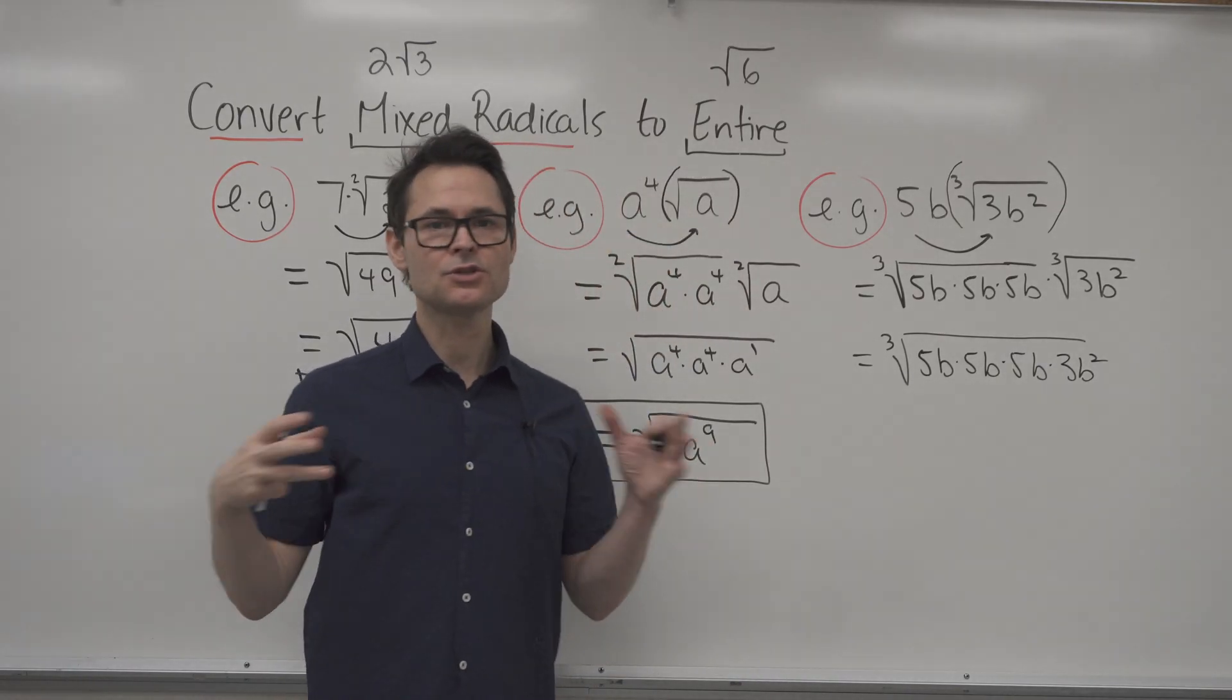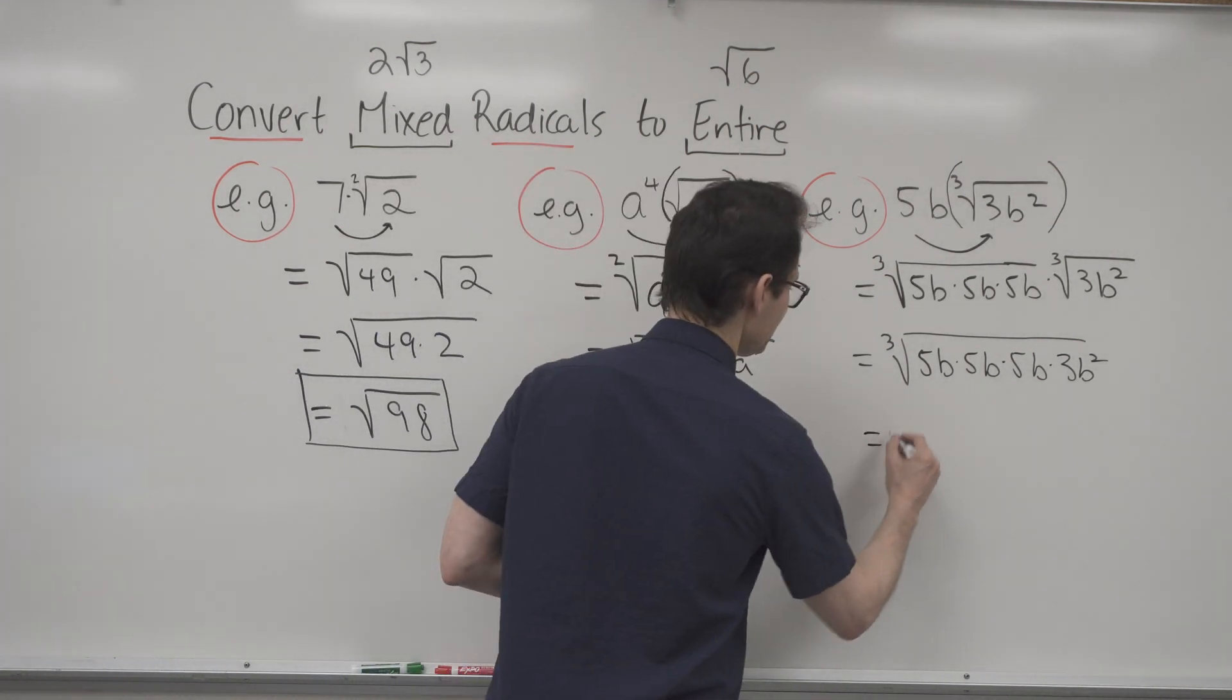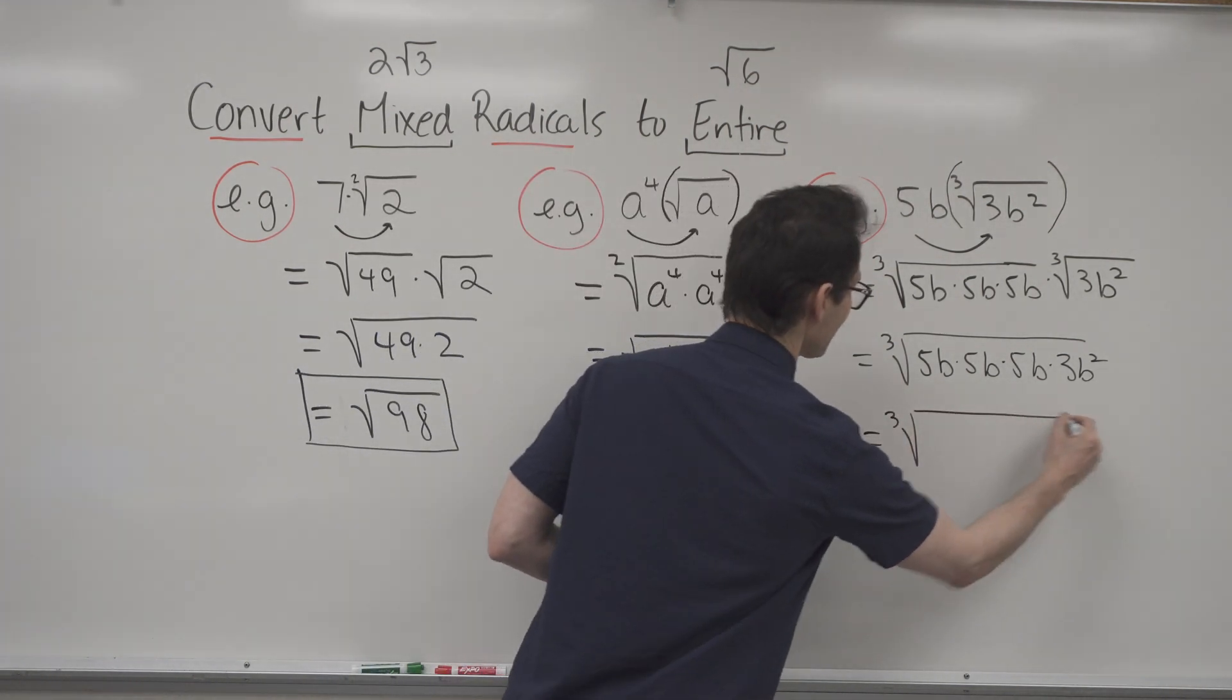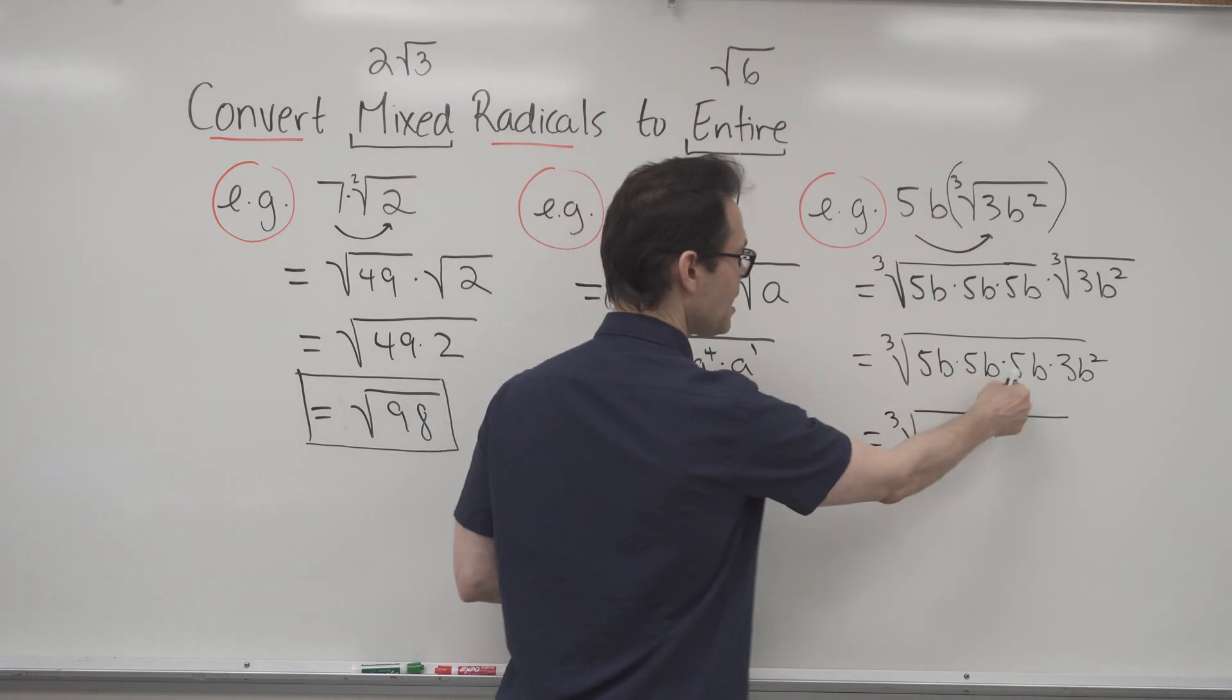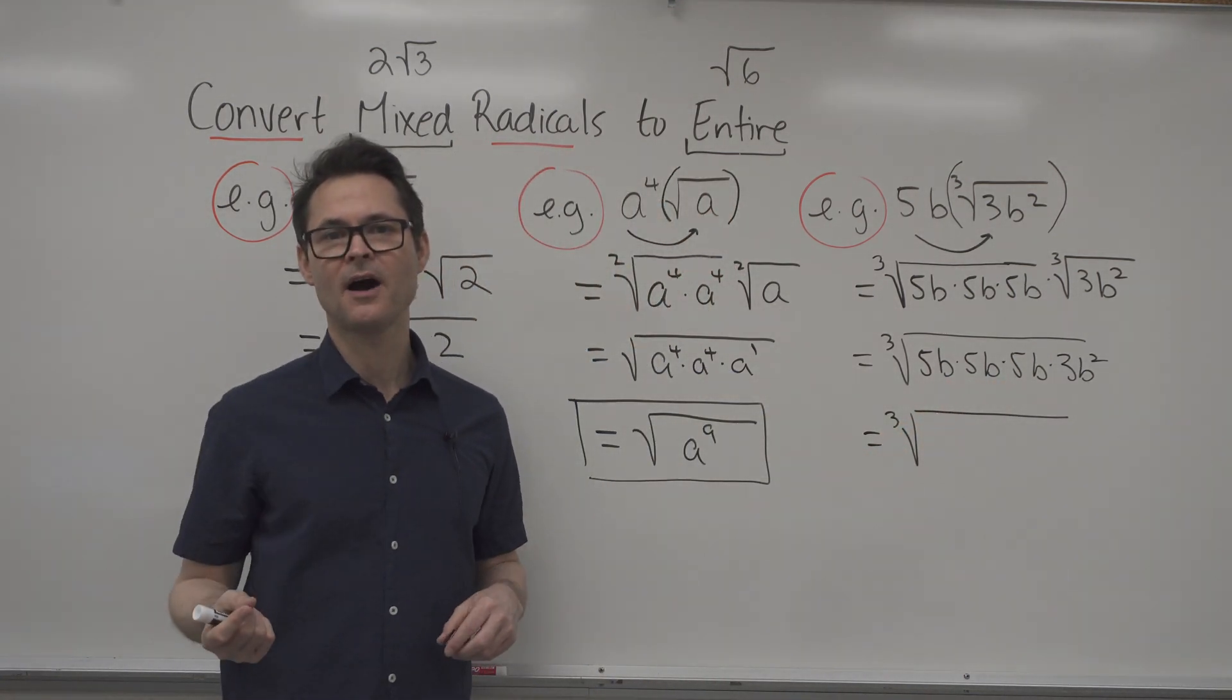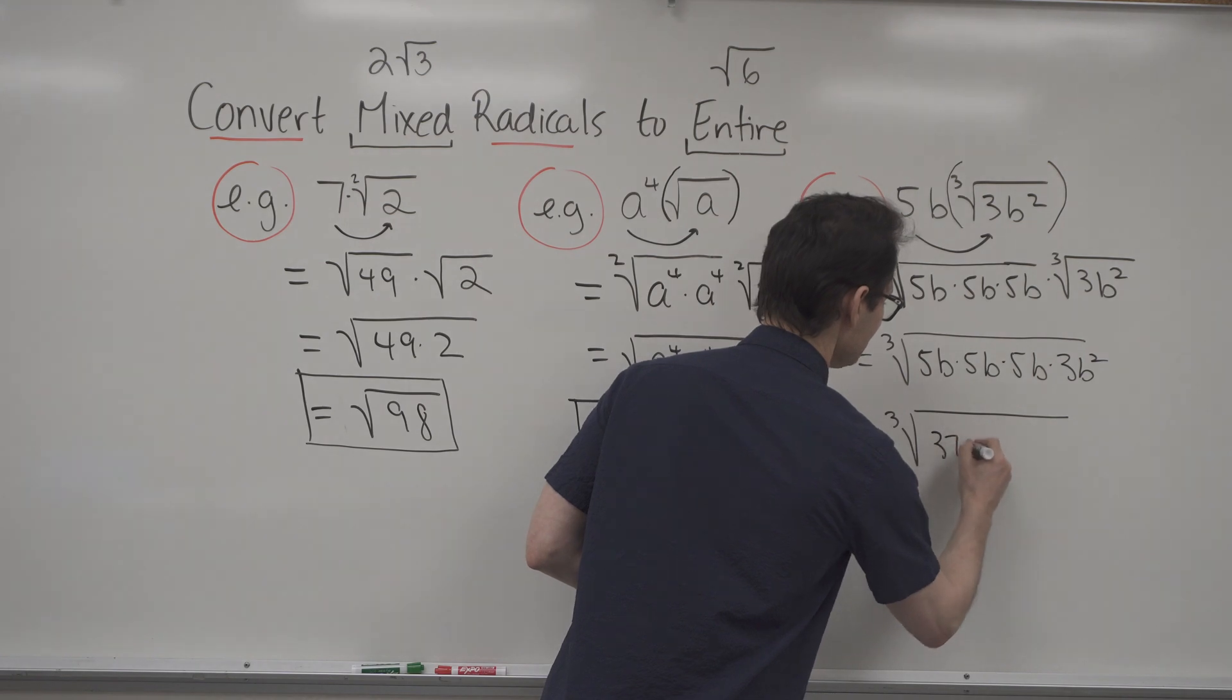And now I can just treat the numbers like normal numbers on the inside. So that's equal to the cube root. Well, 5 times 5 times 5 is 125 times 3 is 375.